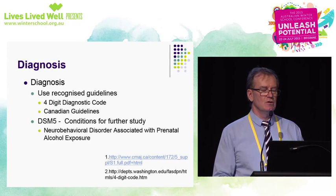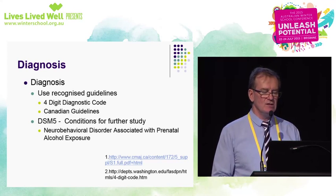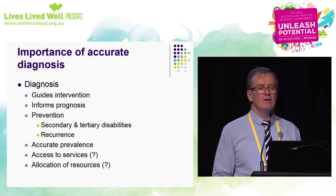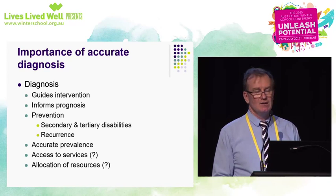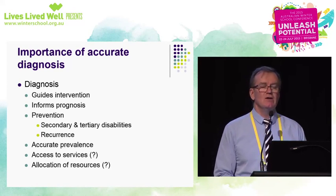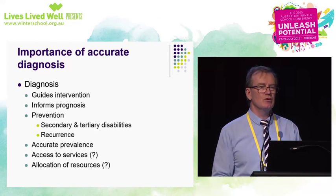Diagnosis. We tend to use recognised guidelines well established overseas. It may make its way into the next edition of DSM and is currently listed in the back pages as a condition for further study. The importance of accurate diagnosis is that it guides intervention, provides templates to predict the future, informs prognosis, allows prevention, allows accurate prevalence data, may lead to access to services and allocation of resources. A diagnosis is different to a label — a label is something you put on a jam jar; a diagnosis does all these things.